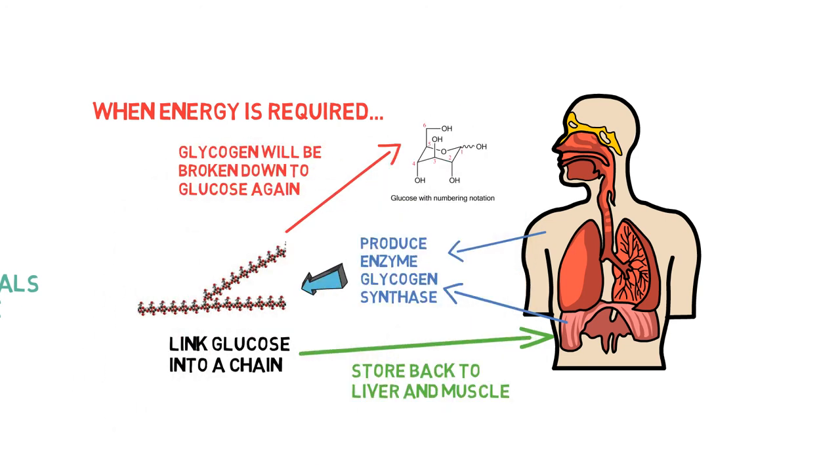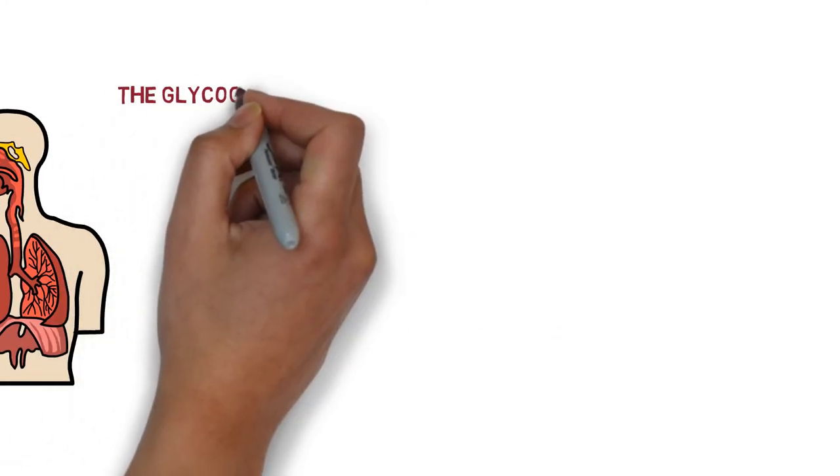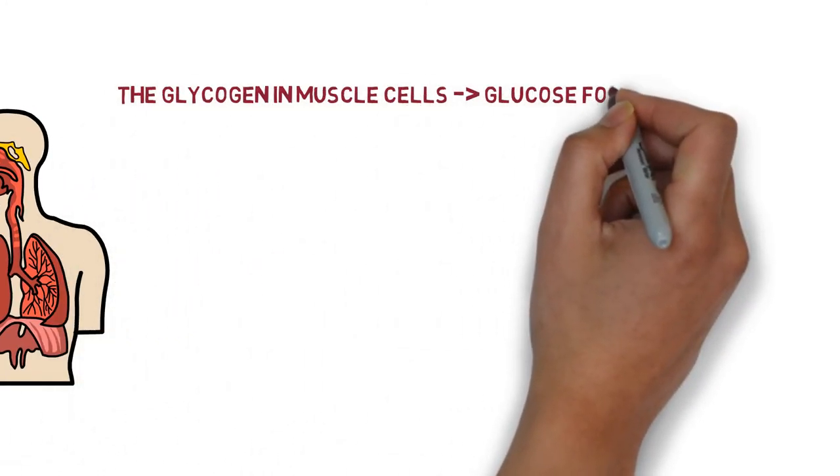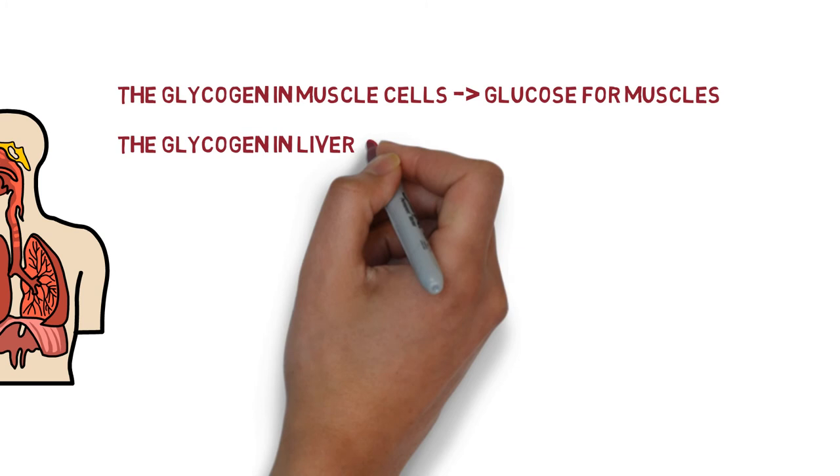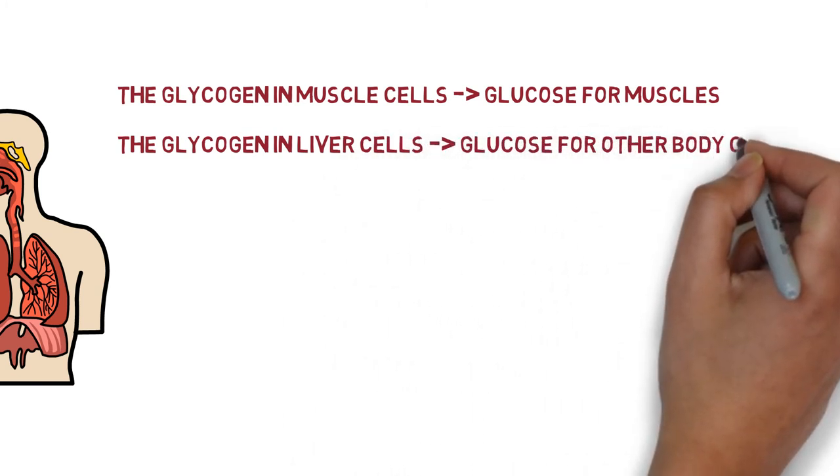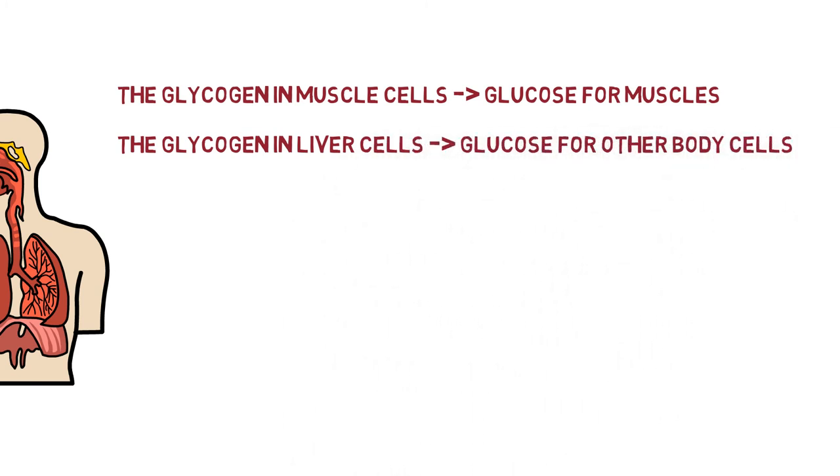Generally, the glycogen in muscle cells only provides glucose for muscles, while the glucose derived from liver glycogen provides energy for other body cells. In summary, glucose is the essential source of energy for our body cells.